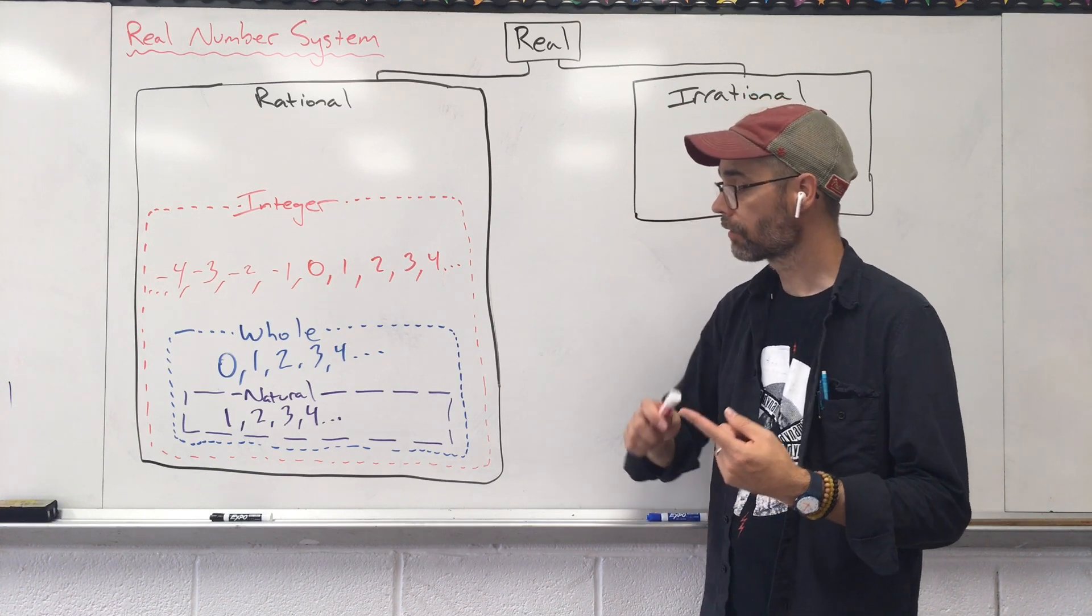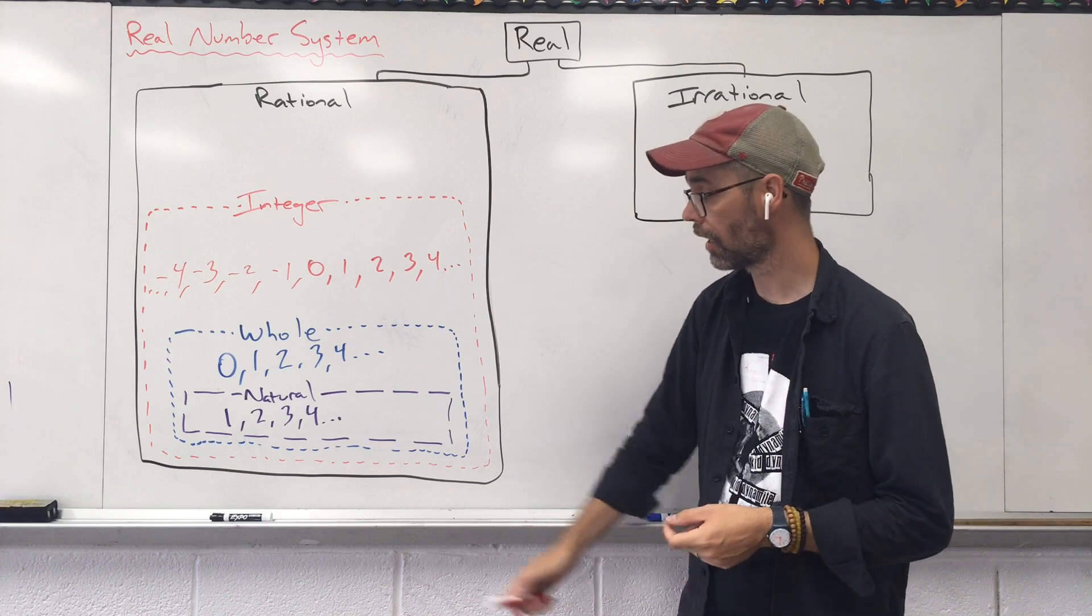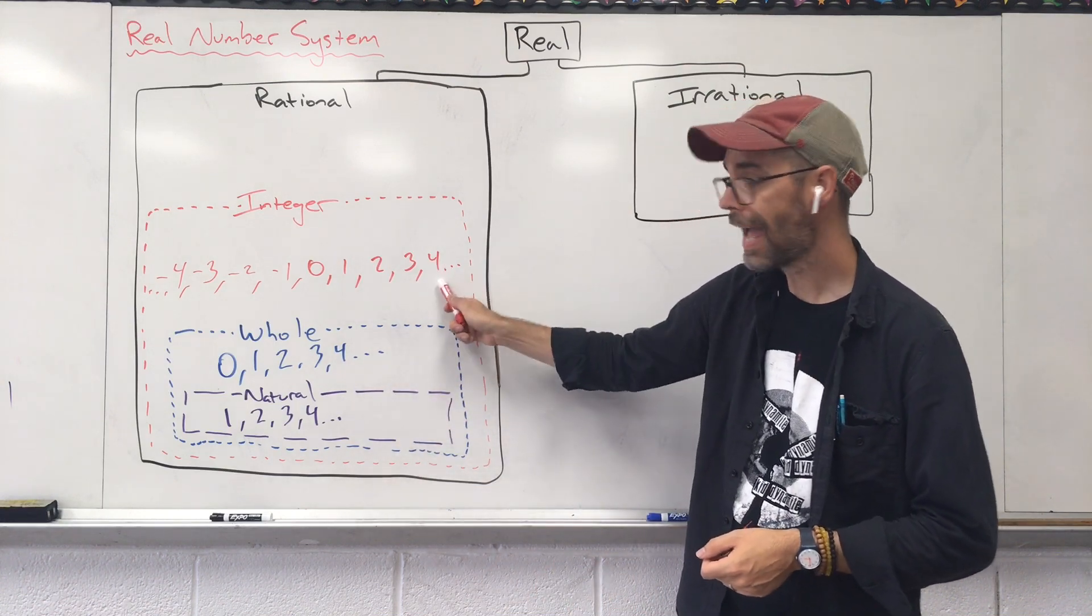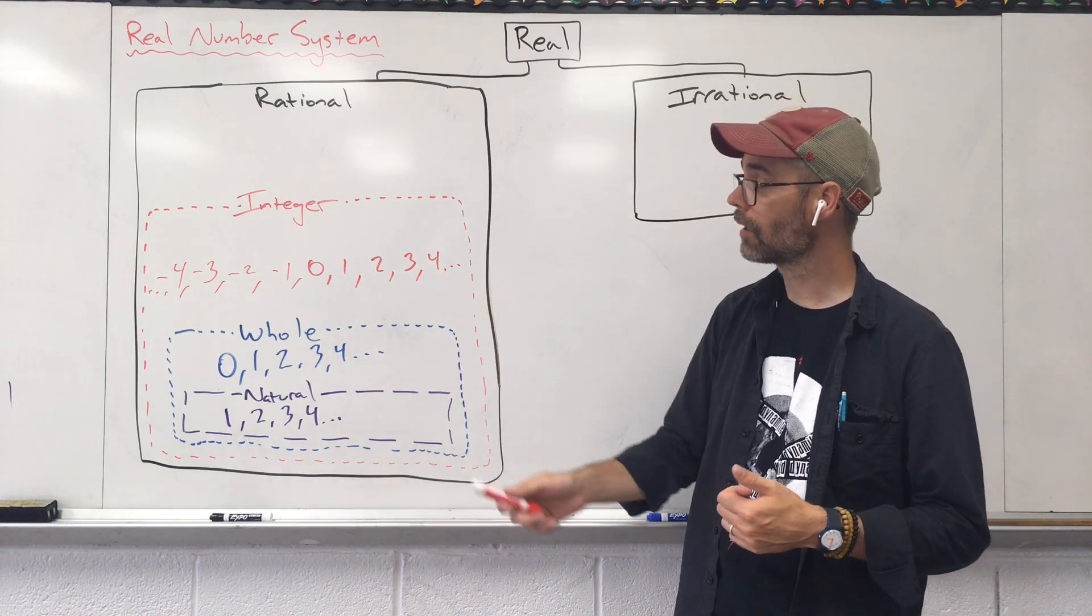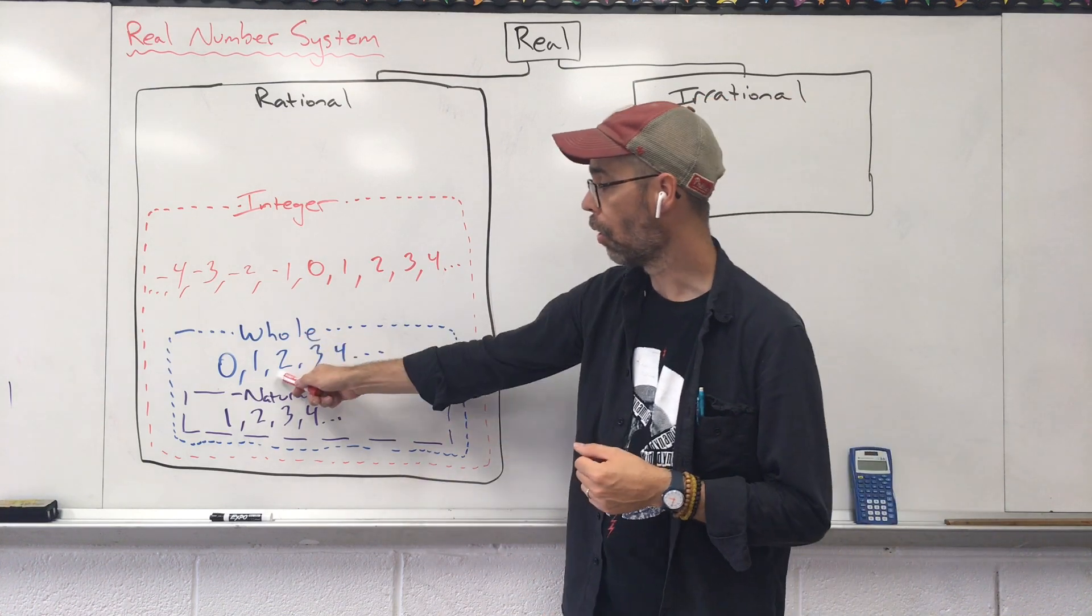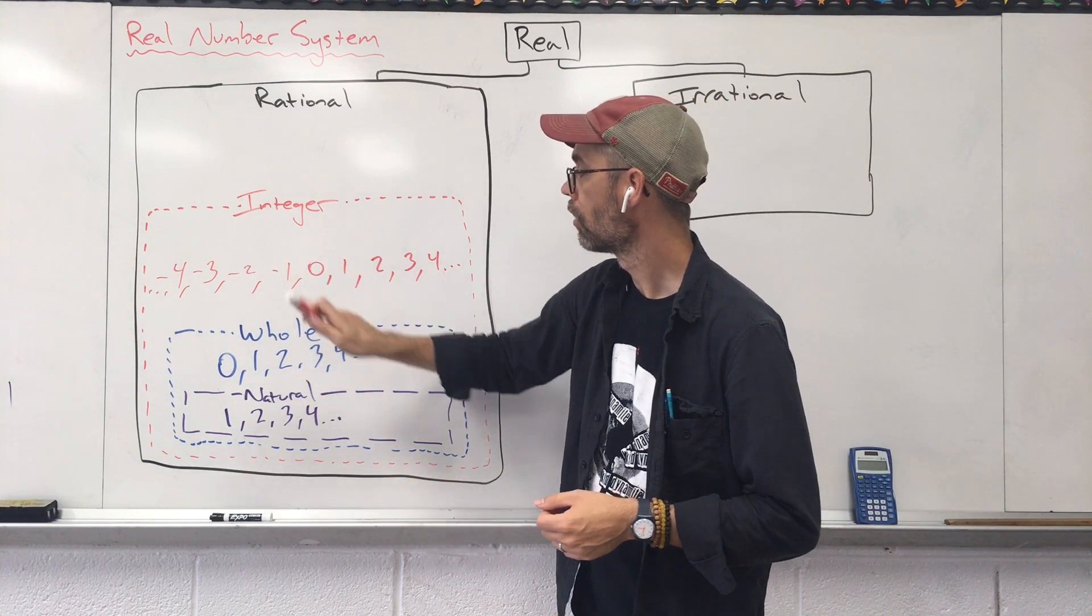So I could ask, can you categorize four again for me? You're going to say natural, whole, and integer. If I were to ask about zero, whole, integer.